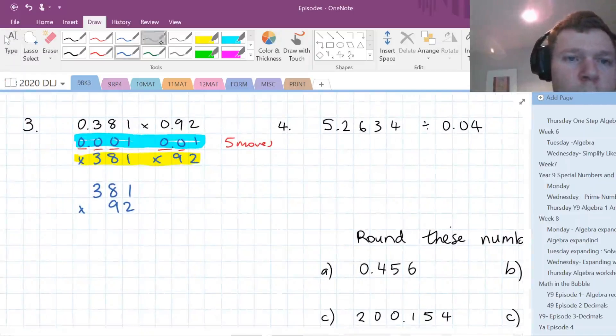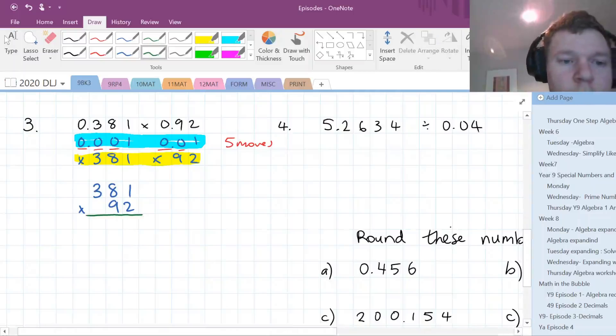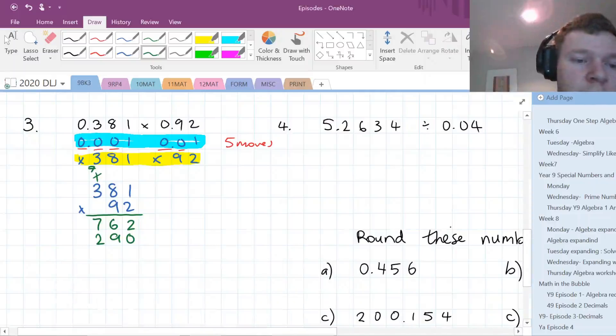Two times one is two. Two times eight is sixteen, carry one over. Two times three is six, plus one makes seven. Moving on to the nine, which is a 90, so we need a zero placeholder there. Nine times one is nine. Nine times eight, seventy-two, dragging seven over. Nine times three is twenty-seven, plus seven makes thirty-four.